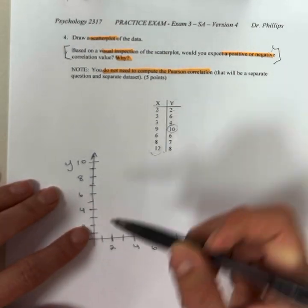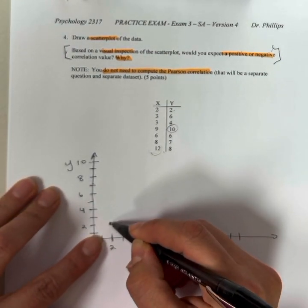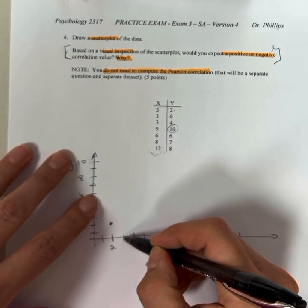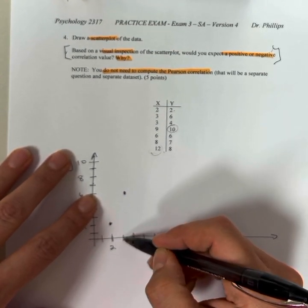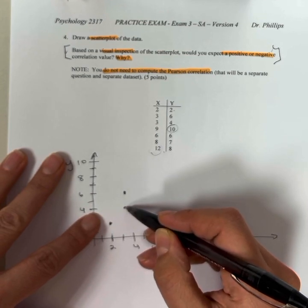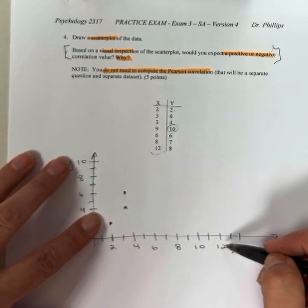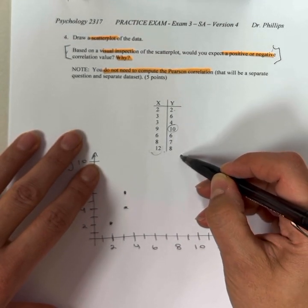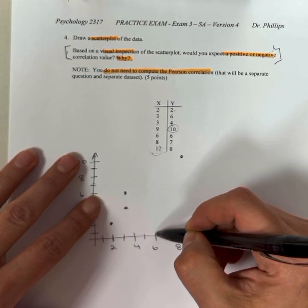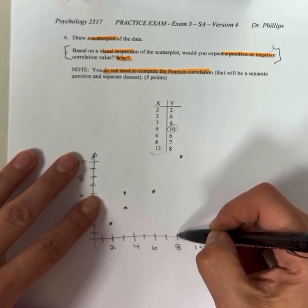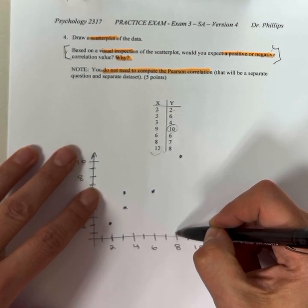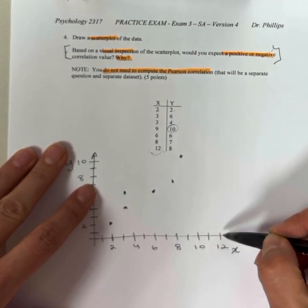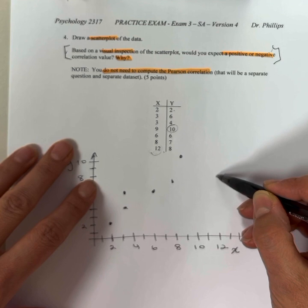x is 2, y is 2, there's one here. 3, 6. 3, 4. 9, 10. 10, 6, and 6, 8, and 7, and 12, and 8.